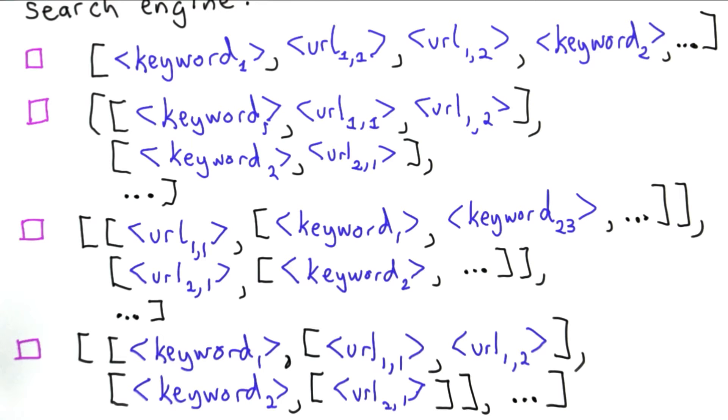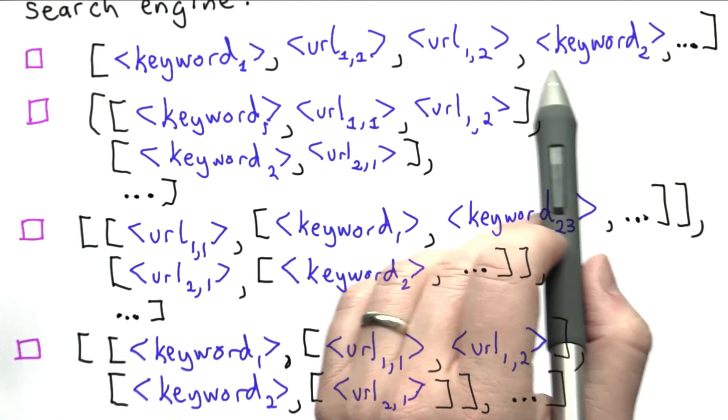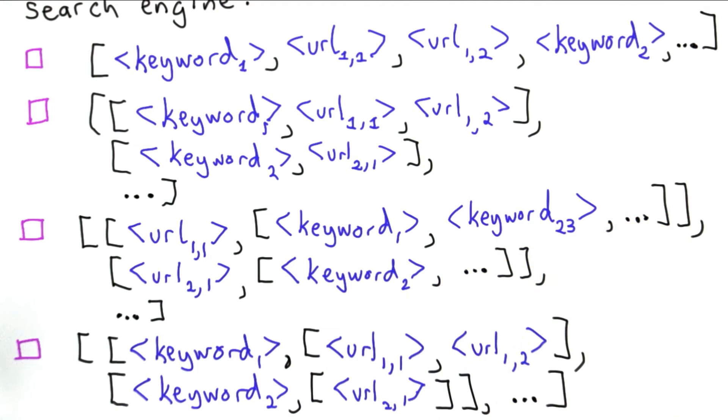So the first option is we could have a single list where we have a keyword followed by the URLs where that keyword appears, followed by another keyword, followed by the URLs where that keyword appears.